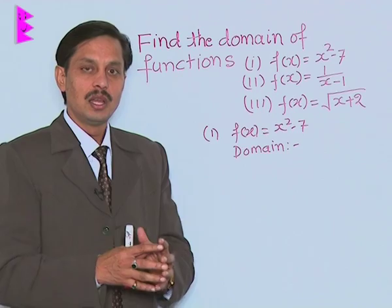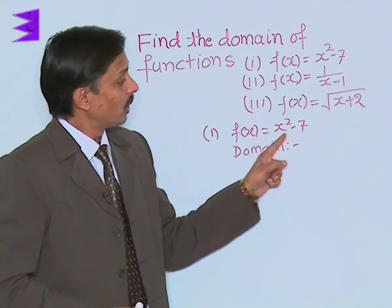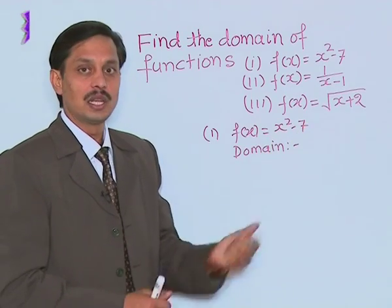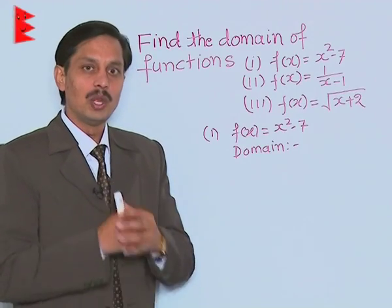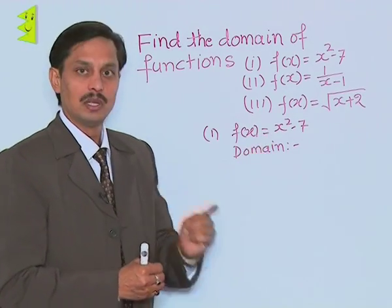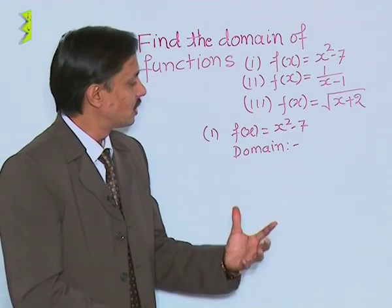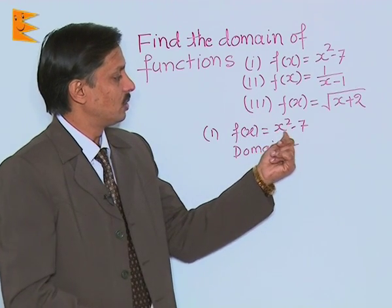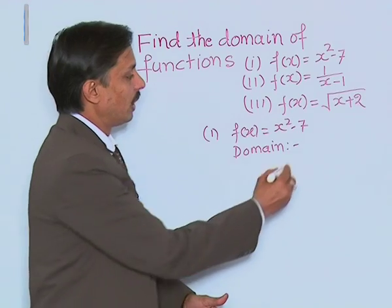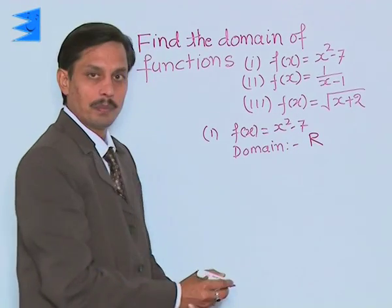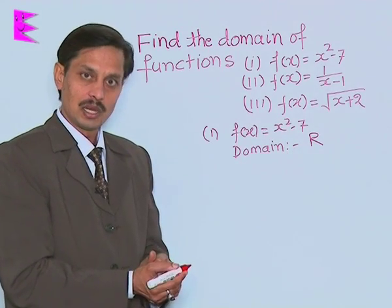The function always has a valid value. If we observe the function x² - 7, each real value of x will always give a real answer. So it means that for the function f(x) = x² - 7, the domain is any real number, and symbolically we write capital R.